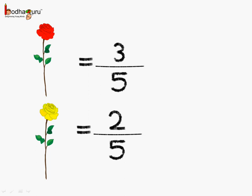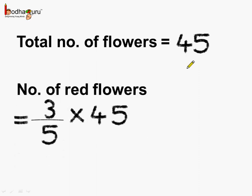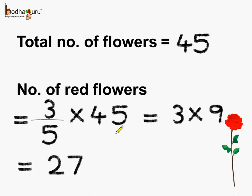Now we can find out the number of red and yellow flowers because we know the total number of flowers, which is equal to 45. The number of red flowers would be 3 by 5 multiplied by 45. We reduce this by dividing both numerator and denominator by 5 — 5 nines are 45 — so this gets reduced to 3 into 9, which is equal to 27. So there are 27 red flowers.